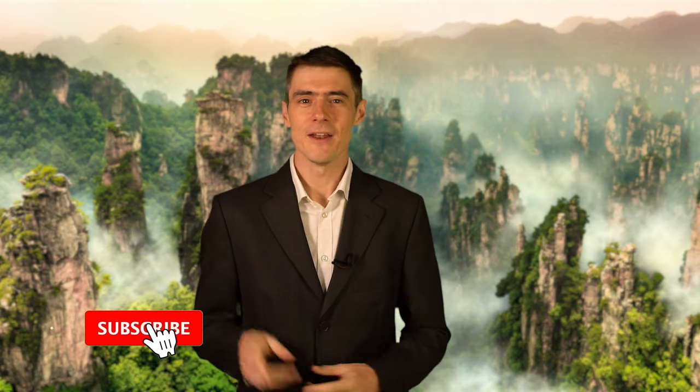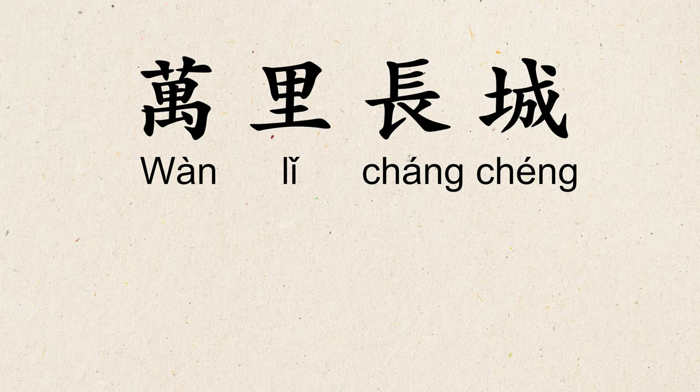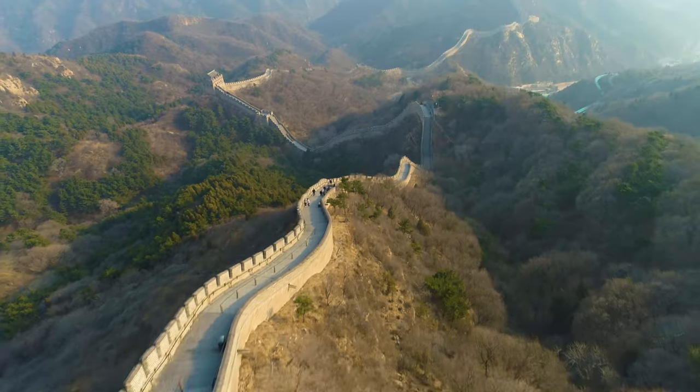Welcome to Learn Chinese Now. My name is Ben, and I'm in today for our regular host, Jared. The Great Wall of China in Chinese is called 万里长城, which literally means 10,000 里, a Chinese unit of measurement, long wall. One 里 is about half a kilometer, so I guess it should be called the 5,000 kilometer wall — it doesn't really have the same ring to it.